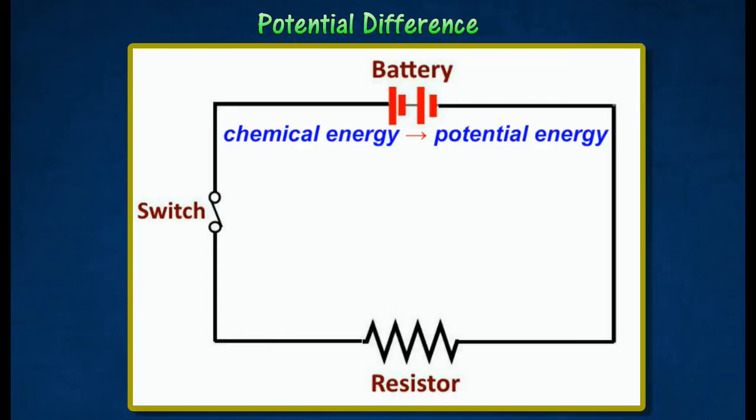When electrons pass through a resistor in the circuit, they give up some of the electrical potential energy to the thin wires in the resistor in the form of heat. Therefore, across the resistor, there is an electrical energy difference.